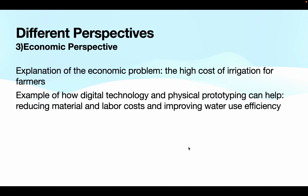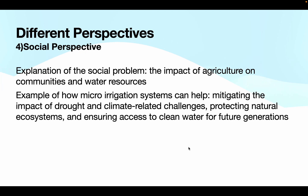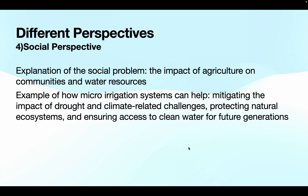From a social perspective, the problem associated with irrigation is the impact of agriculture on communities and water resources. Micro irrigation systems can help mitigate the impact of drought and climate-related challenges, protect natural ecosystems, and ensure access to clean water for future generations.